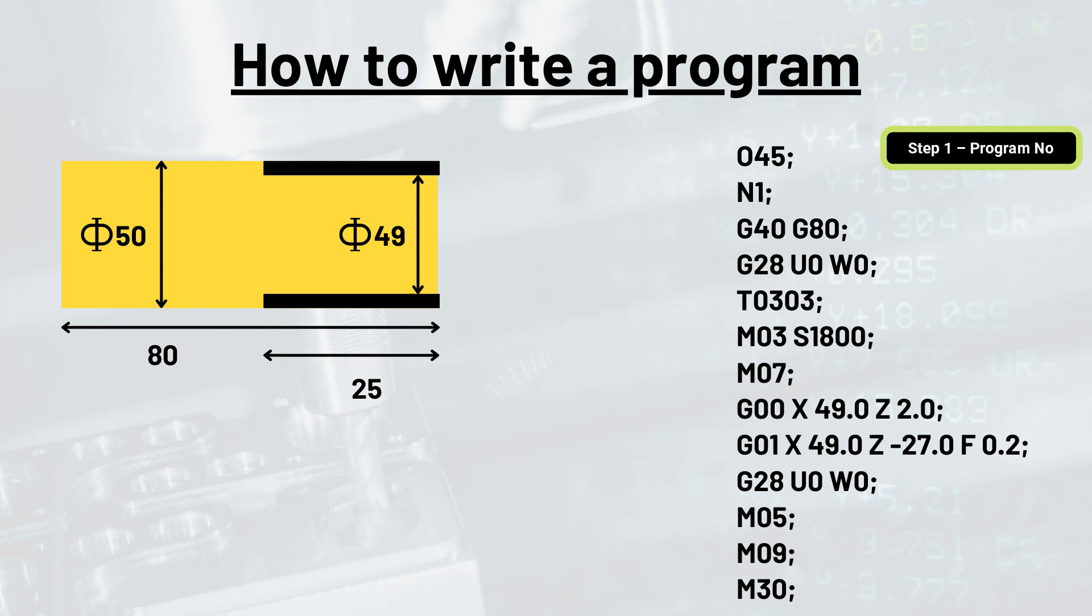The next step is providing the sequence number. In this step we provide sequence number to the program. If for one particular operation we need different tools, we need a sequence for the same. Let's say N1 is the sequence for one sequence.